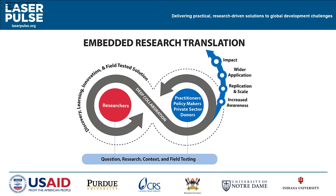Results of this collaboration include discovery, learning, innovation, and a field-tested solution. Importantly, this is a non-linear process that incorporates potential failures and adaptation over multiple iterations, with the understanding that eventually the team develops a field-tested solution. Once the team has established a field-tested solution, they can then engage other — sometimes new — partners in dissemination. These steps include increased awareness, replication and scale of the solution, wider application, and eventually large-scale impact.